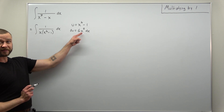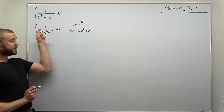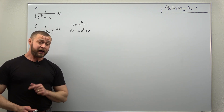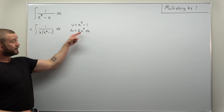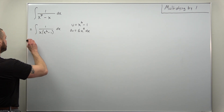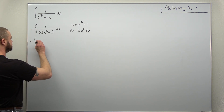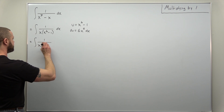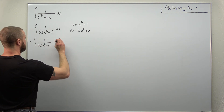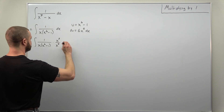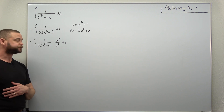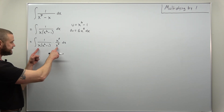Notice our differential has a factor of x⁵ but our integral doesn't. Well, we're going to multiply by one here — we're going to think of one as x⁵ over x⁵. So let me go ahead and do that: we're going to multiply by x⁵ over x⁵. We're multiplying by one right there, so we're allowed to do that.